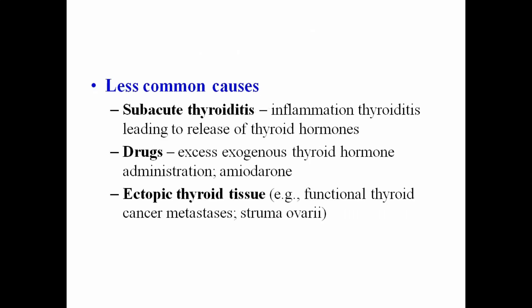Less common causes of hyperthyroidism include subacute thyroiditis — inflammation of the thyroid leading to release of thyroid hormones — administration of certain drugs like amiodarone, excess exogenous thyroid hormone administration, and ectopic thyroid tissues such as functional thyroid cancer metastasis and struma ovarii, which cause increased thyroid hormone synthesis.